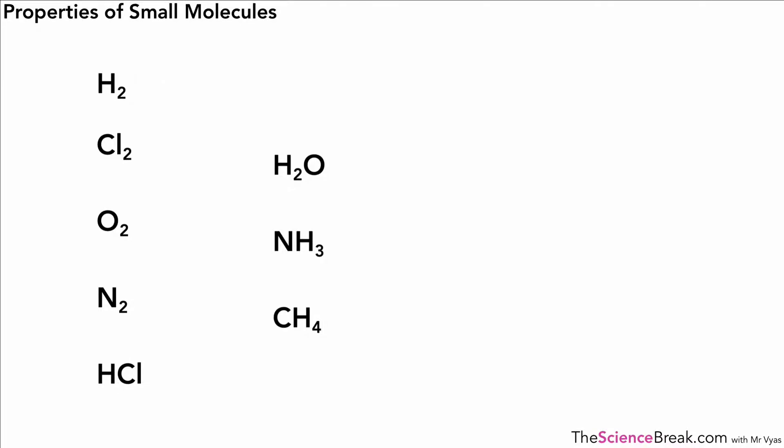Today we're going to look at the properties of substances made of small molecules. We've got a list of those outlined here, and remember when we're talking about small molecules, we're talking about substances or molecules that are joined by covalent bonds. The word molecule automatically means the atoms are joined by covalent bonds.